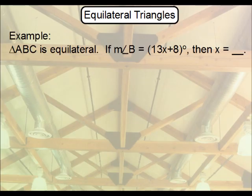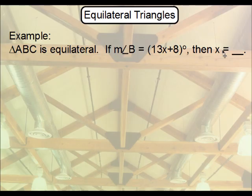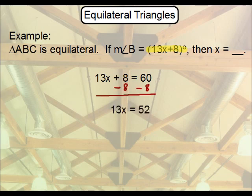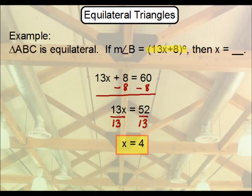Let's do one last example. You're simply told that triangle ABC is equilateral, and angle B measures 13x plus 8. What is the value of X? We approach this the same way — each angle in an equilateral triangle is 60 degrees. Since angle B is also 60 degrees, set 13x plus 8 equal to 60. Then subtract 8 and divide by 13. And that's all there is to it.